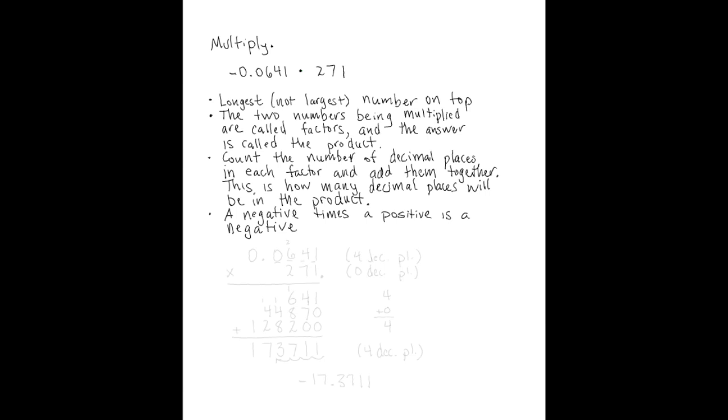So let's do our multiplication. Putting the longest number on top, we have 0.0641, and that's being multiplied by 271. We'll draw our line and begin. We've got a 1 here. We'll multiply 1 by each digit in the factor above.